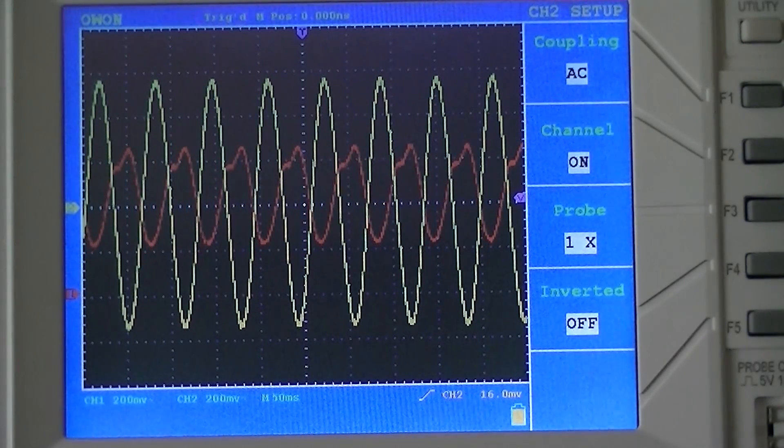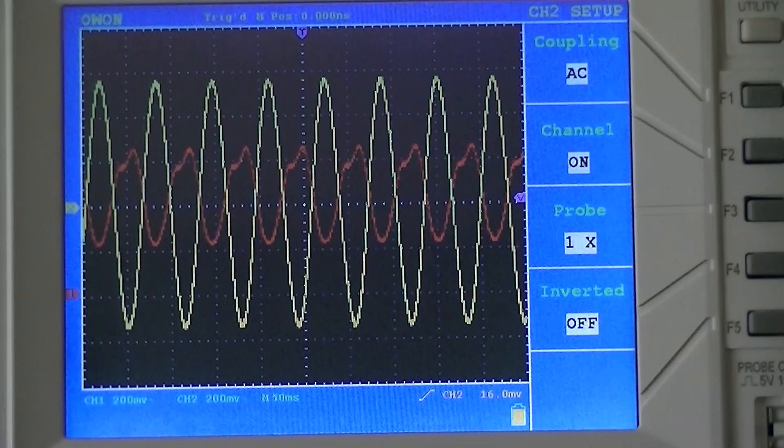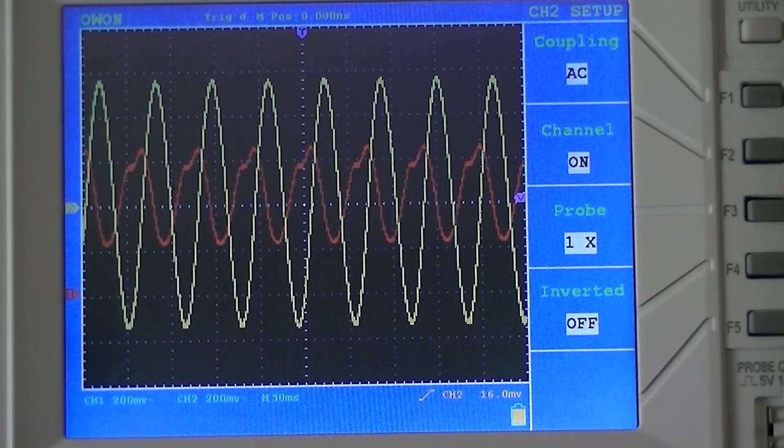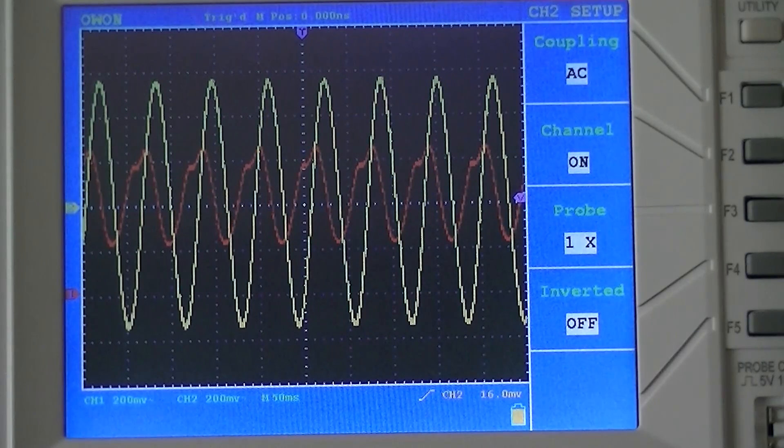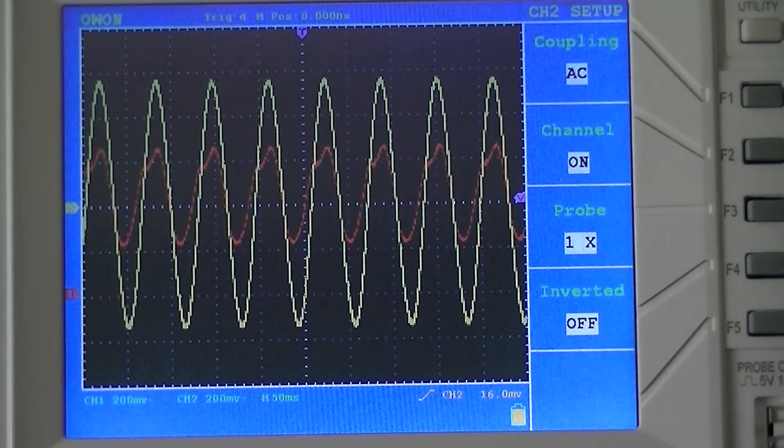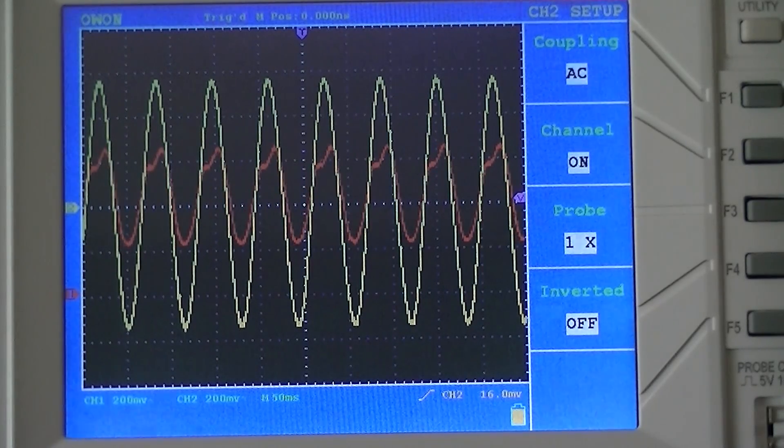You can see that we've got distortion in the waveform coming out of the stereo system. You can see the little peaks of the red waveform, the little kink in there. That's harmonic distortion. It's not faithfully reproducing the sine wave.